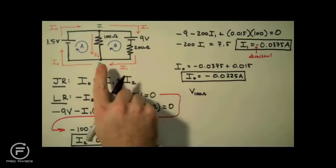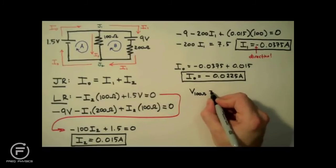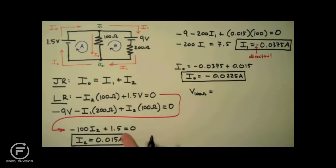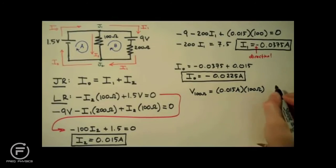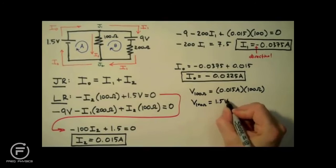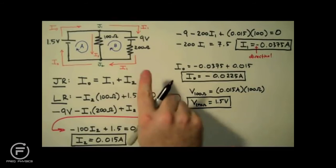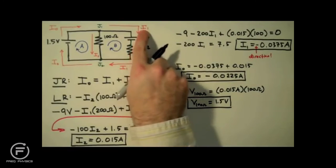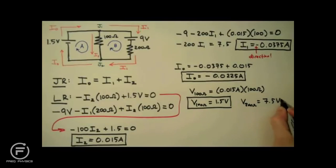Now that we have the currents, we can determine the voltage drops across the resistors using the current and resistance values — in other words, Ohm's Law. For the 100 ohm resistor, using the 15 milliamp value gives a voltage drop of 1.5 volts. For the 200 ohm resistor, using that current and 200 ohms gives a voltage drop of 7.5 volts.